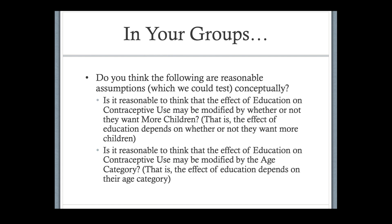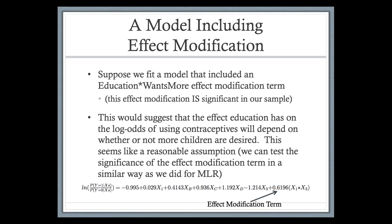What this would mean is that the effect education has on contraceptive use changes depending on whether or not they want more children. In other words, we'd have to say: here's the effect of education on contraceptive use when they want more kids, and here's the effect when they do not. If the effect of education changes depending on whether or not they want more kids, that's effect modification — and we'd need to report two separate odds ratios.